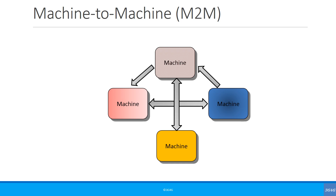So what exactly is machine to machine? A simple way of describing M2M is basically connectivity and exchange of information from one machine to another. This communication is really from machines to other machines — which is why the term 'machine to machine' is not really accurate; it should be 'machines to machines.' This is one of the reasons why 3GPP actually refers to M2M in the specifications as MTC — machine type communications.